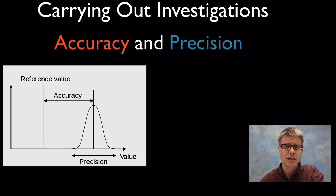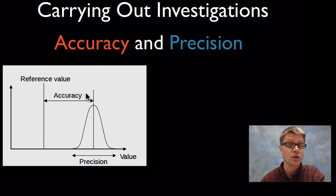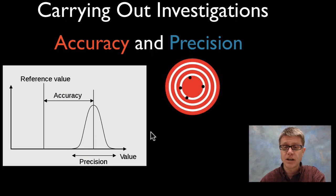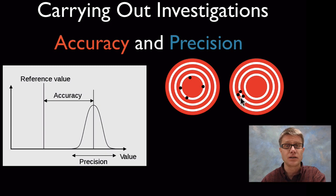When carrying out investigations there are a few key things to discuss: accuracy and precision. Accuracy is how close you are to the right answer. Precision looks at how close your repeated measurements are to each other. You can have data that's accurate but not precise — spread out but near the right answer — or data that's precise but not accurate — grouped tightly but far from the right answer. You want to be accurate and precise: right in the middle of that target. That's why you repeat the experiment over and over again until you get very good data.